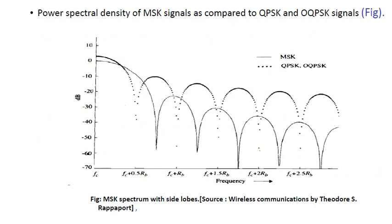For an N-bit stream, the MSK signal is given by the expression below. This shows the power spectral density of the MSK signal compared to QPSK and offset QPSK signals. In the figure, the dotted line denotes QPSK and offset QPSK, and the hyphen line denotes MSK.